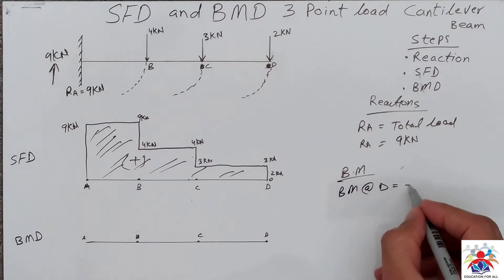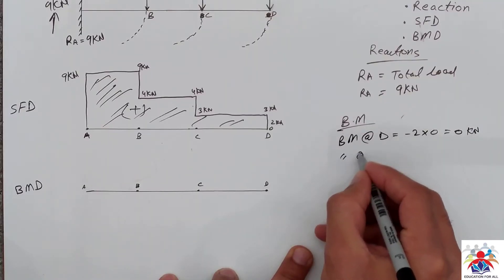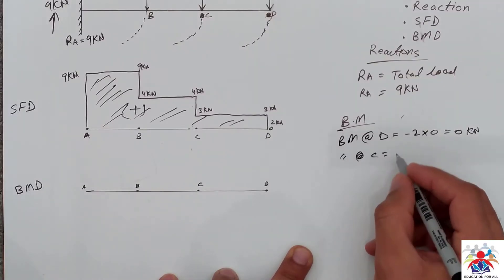So minus 2 multiply by 1 is equal to 0 kilonewtons. Bending moment at point C will be: